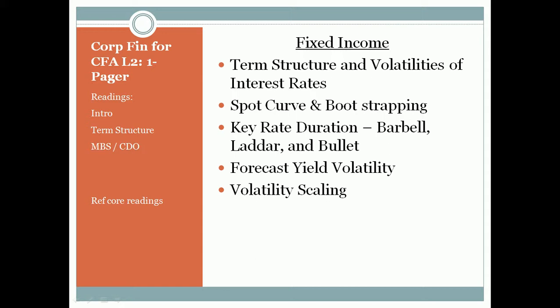In a non-parallel shift, the new curve may be more or less steep than the original. A yield curve twist refers to a change in the slope, becoming either flatter or steeper. A yield curve butterfly shift refers to a change in the degree of curvature — a positive butterfly means the yield curve has become less curved, while a negative butterfly means it has become more curved. These are the three types of yield curve changes we consider.